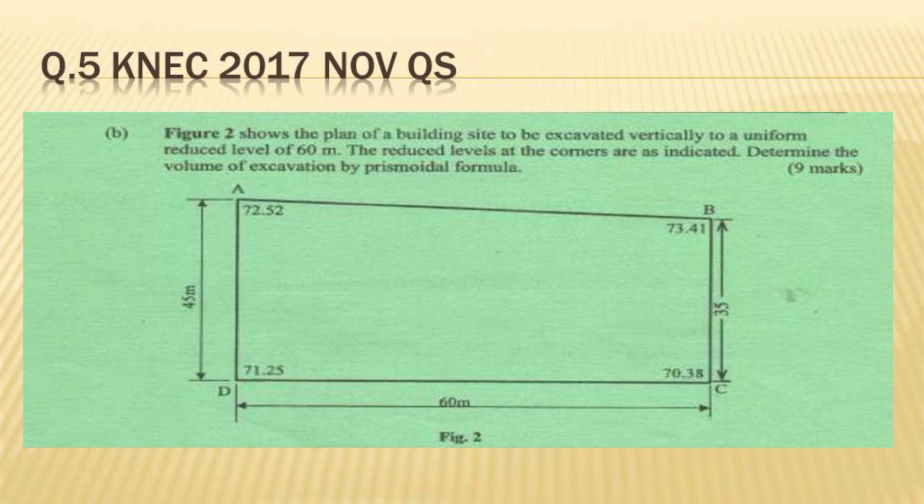Let's look at the question provided. From the diagram, we can observe that it is a requirement that excavation will need to be done uniformly to a reduced level of 60 meters. All our reduced levels will have to dig down to 60 meters, so that means you are going down.